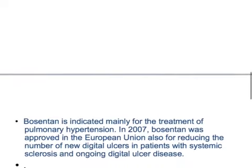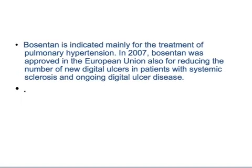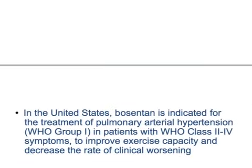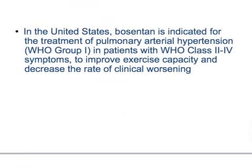Bosentan is indicated mainly for treatment of pulmonary hypertension. In 2007, Bosentan was approved in the European Union and also for reducing the number of new digital ulcers in patients with systemic sclerosis with ongoing digital ulcer disease. In the United States, Bosentan is indicated for the treatment of pulmonary artery hypertension.